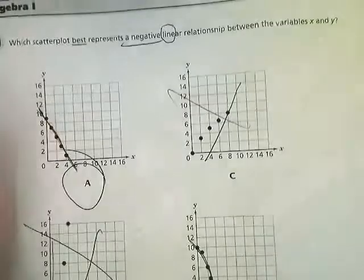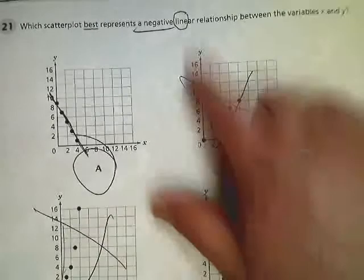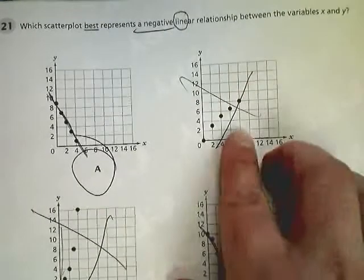So our negative linear is number 21. So it's pretty simple. Just look if it's negative or positive. Negative goes down. Positive goes up over time. And then linear would indicate that it makes a straight line.